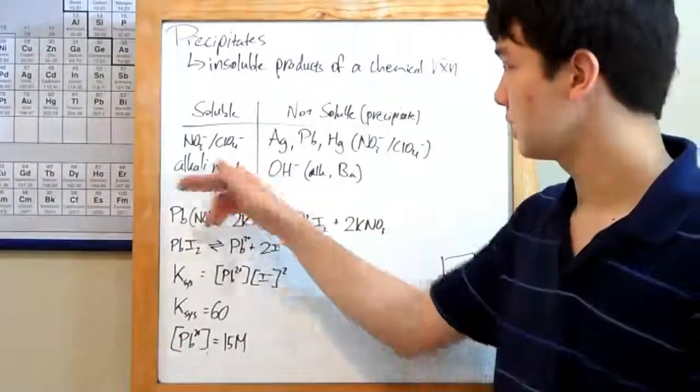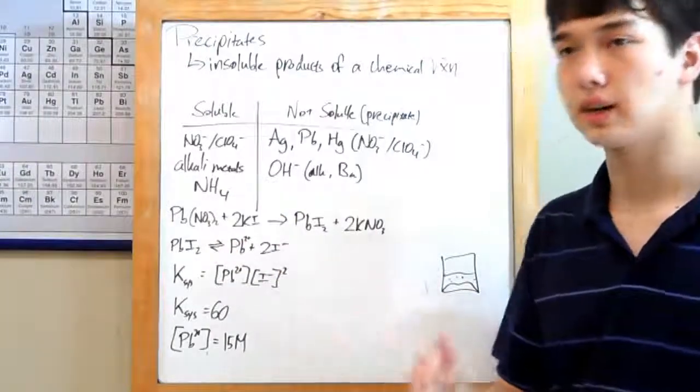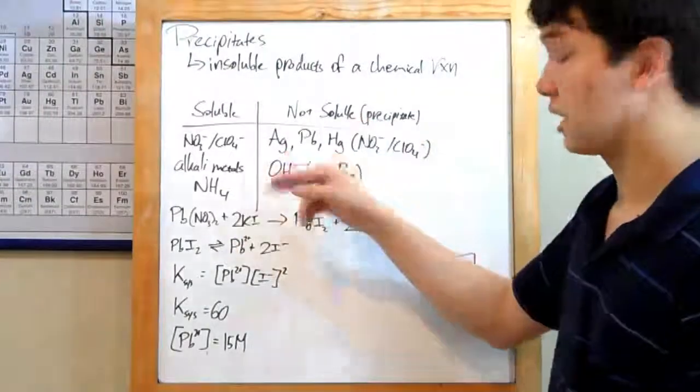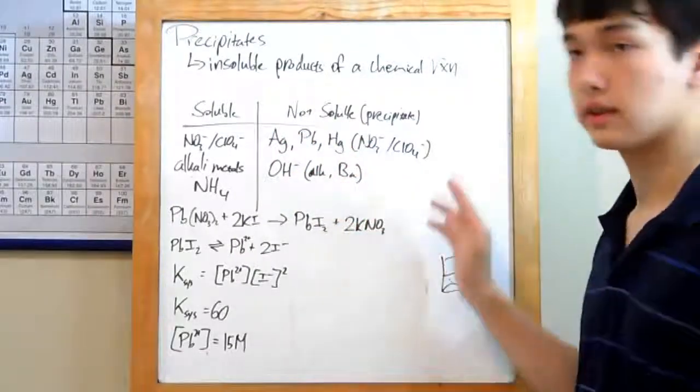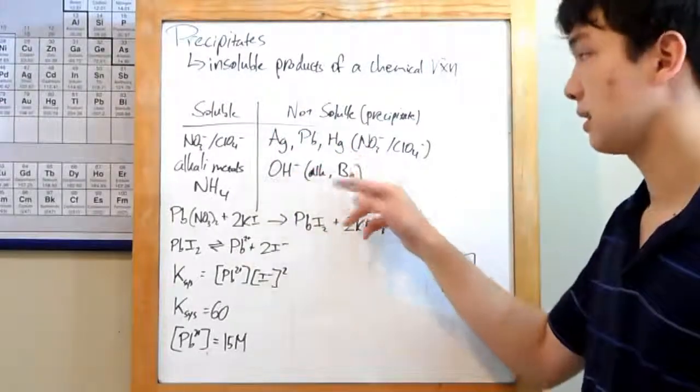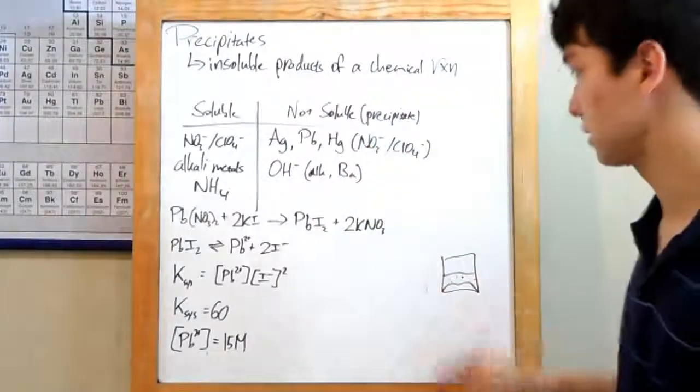If it's attached to a nitrate, a perchlorate, alkali metal, or ammonium, it'll be soluble, so that's not a precipitate. If it, however, is attached to silver, lead, or mercury, as long as any of these three is not attached to a nitrate or a perchlorate, it won't be soluble, and it'll come out as this lump.